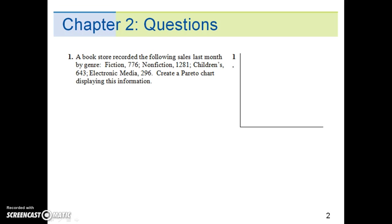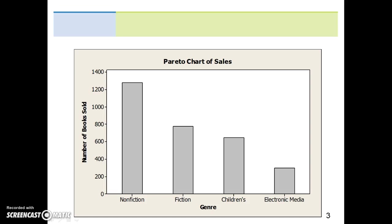First, give it a try on your own and to verify your answer, we'll go to the next slide. This shows the Pareto chart of sales by genre from nonfiction, fiction, children, and electronic media. This is what your results should look like.